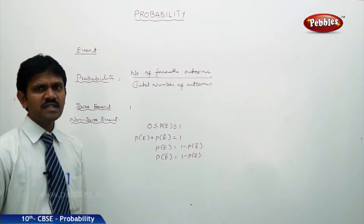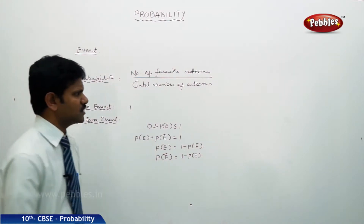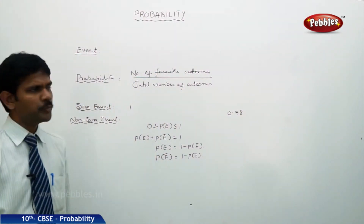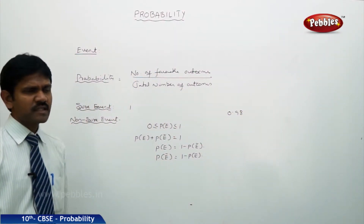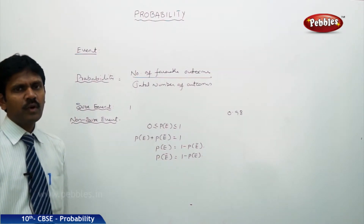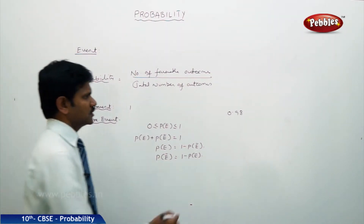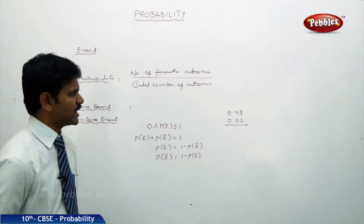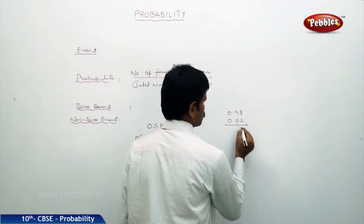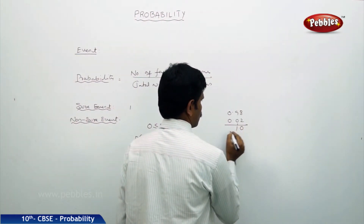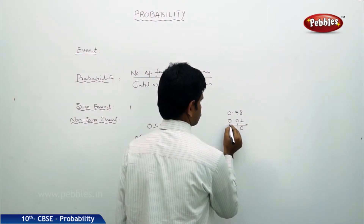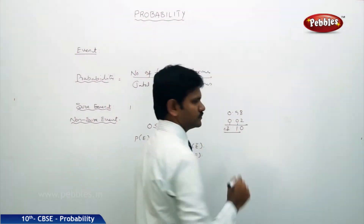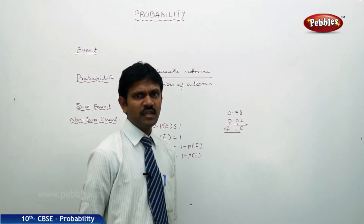For example, suppose the probability of students passing an exam is 0.98. Then the probability of failure is 1 − 0.98 = 0.02, since both together must equal 1.